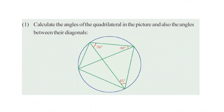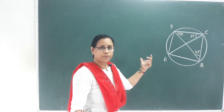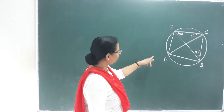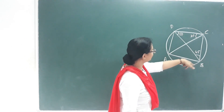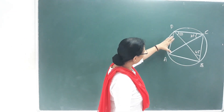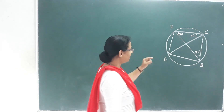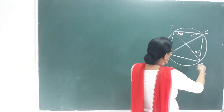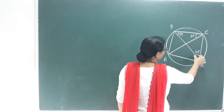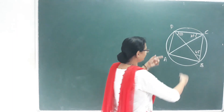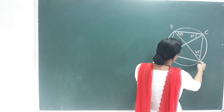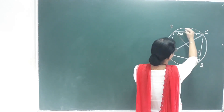Page number 59, first question: Calculate the angles of the quadrilateral in the picture, and also the angles between their diagonals. In this first problem, we have an ABCD cyclic quadrilateral. That means this is a cyclic quadrilateral, so opposite angles sum to 180. We can use the angles-in-the-same-segment concept.